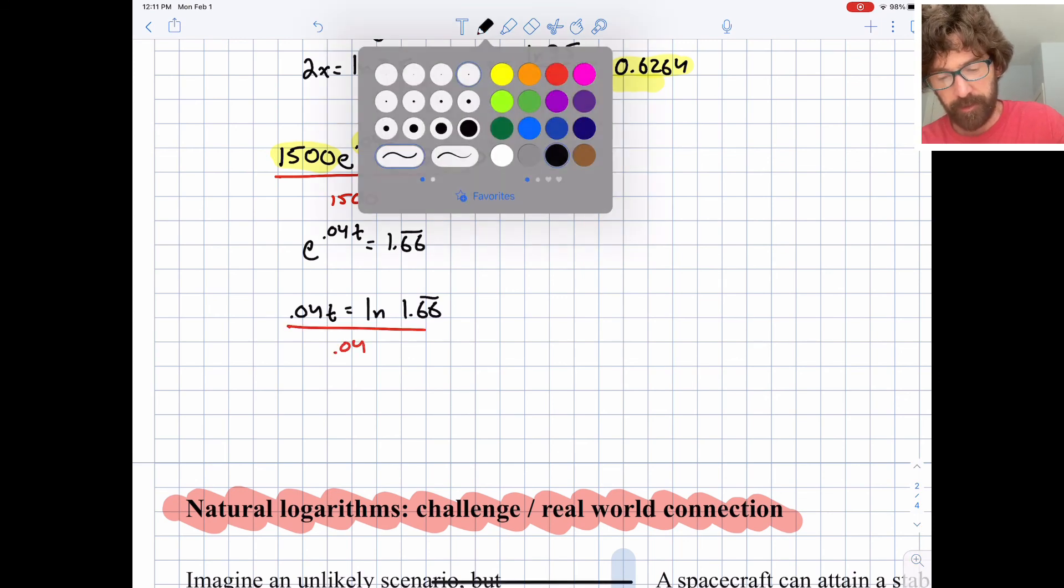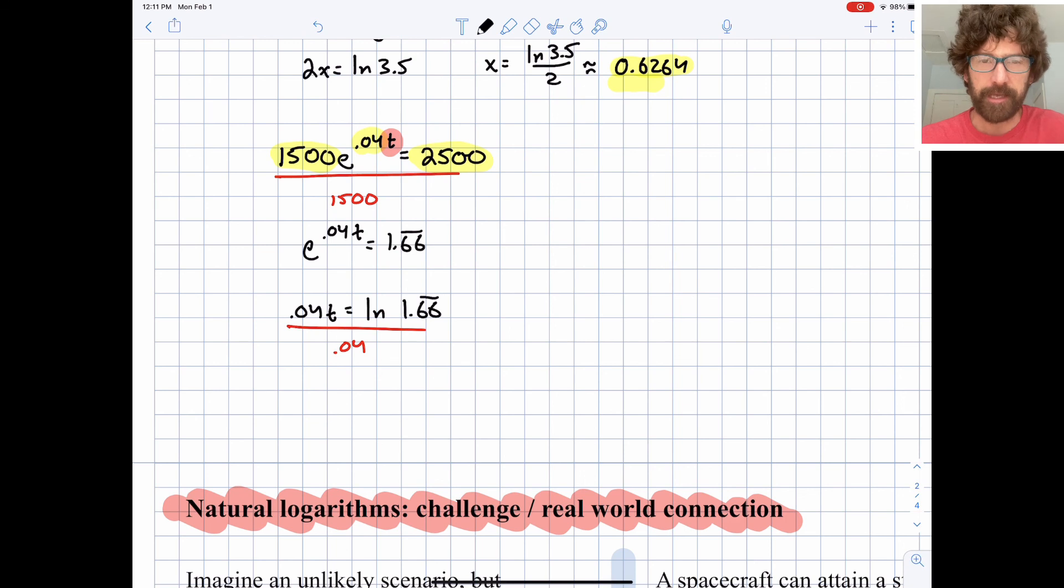And I think you can see that I like getting the exact answer first before I then go to my calculator to get the decimal approximation. So I get a final answer of t is equal to the natural log of 1.66 repeating divided by 0.04. Let's go ahead and do that.